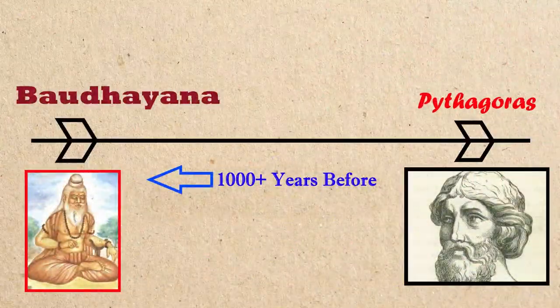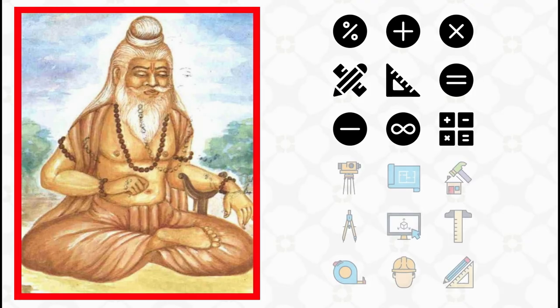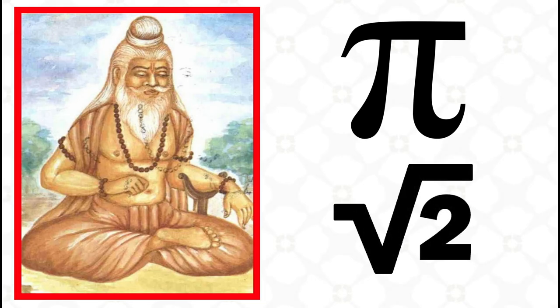It was the very Baudhayana that came up with this intricate sequence. Baudhayana was a mathematician as well as a guru and architect of immense standards. Apart from this theorem, he also mentioned Pi in his scriptures and discovered the square root of 2.